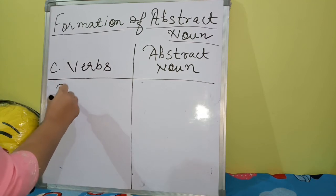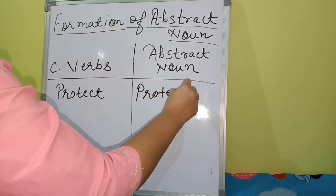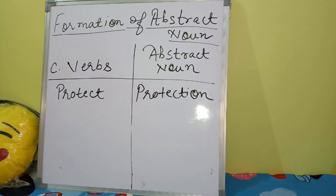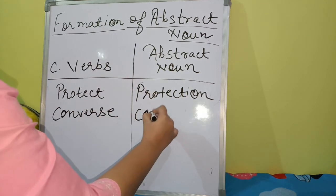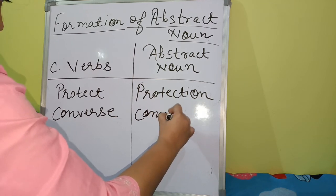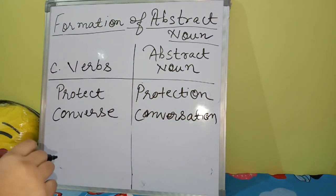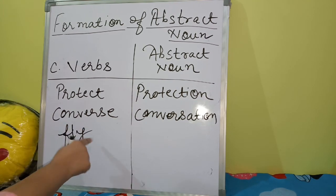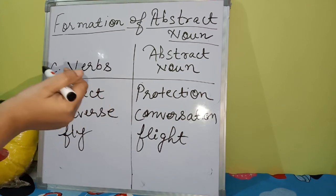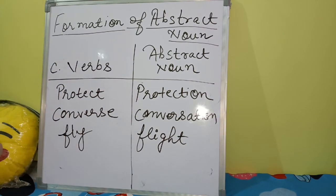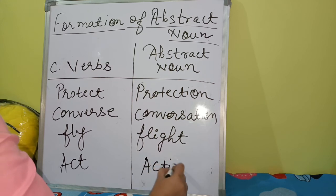From 'protect' we get 'protection.' From 'converse' we get 'conversation.' From 'fly' we get 'flight.' From 'act' we get 'action.' In this way, there are many words — verbs — that we can convert into abstract nouns.